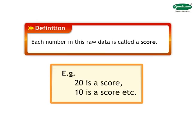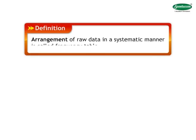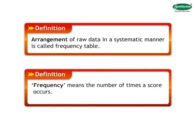After collecting information or raw data, we use this information for various purposes. To draw any inference from this information, arrange this given data in a systematic manner. It will be easier to draw a conclusion. This arrangement of raw data in a systematic manner is called frequency table. Here the term frequency stands for the number of times a score occurs and it is denoted by the letter N.